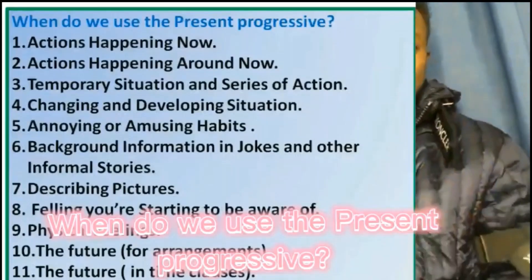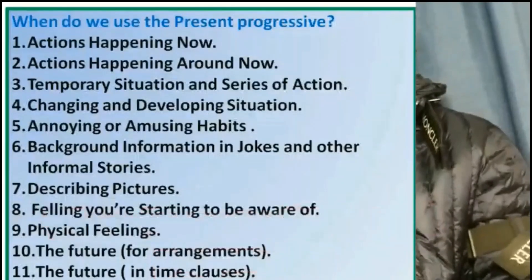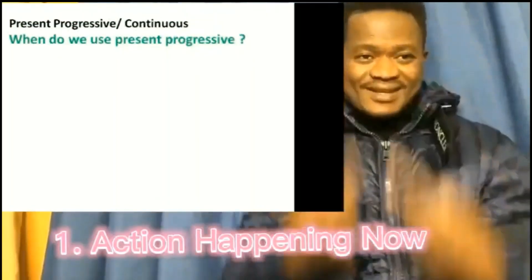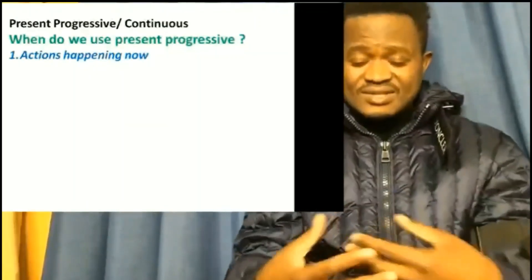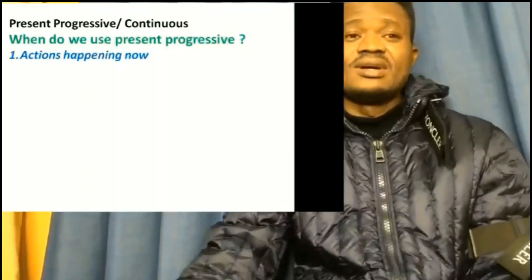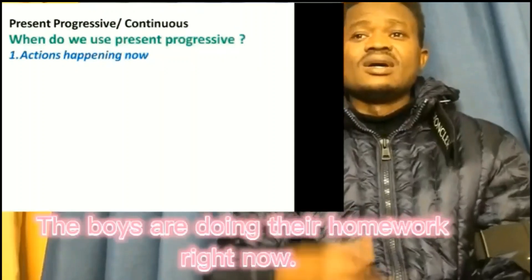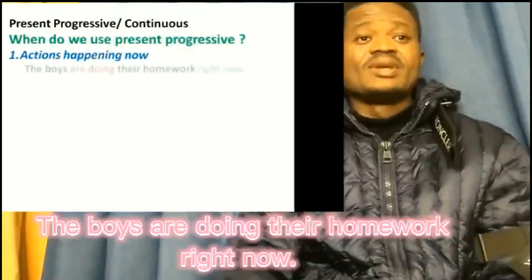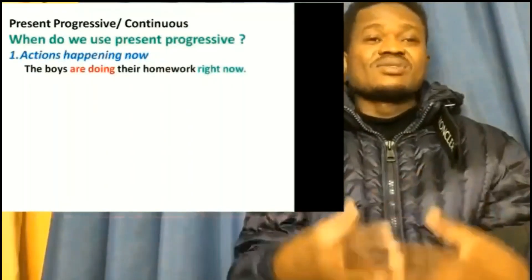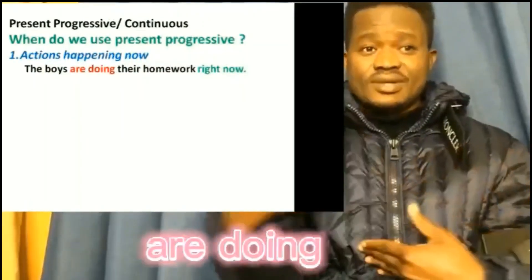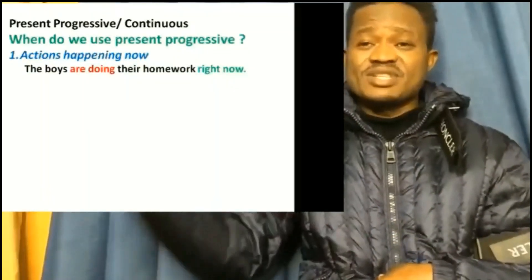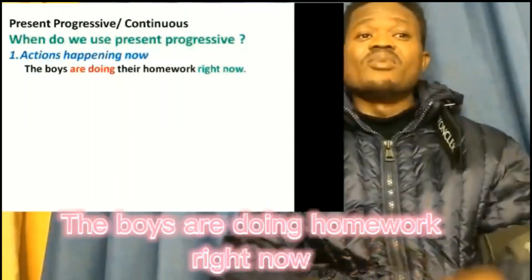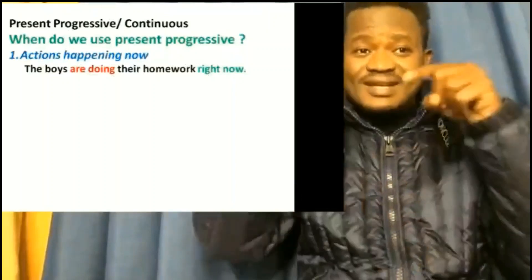When do we use the present progressive? The first use is action happening now. This is the use we mostly know about. For example: 'The boys are doing their homework right now.' Notice the time expression 'right now' — that tells us the action is happening at this moment.